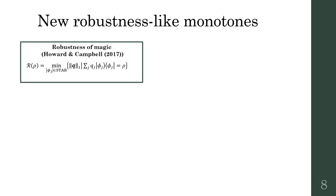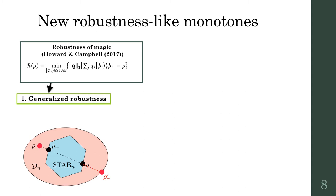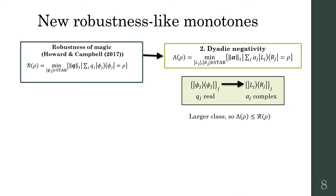In our paper, we obtain new magic monotones by relaxing the definition in two ways. One is called the generalized robustness. You might be familiar with this from other resource theories. I won't spend more time on it in this talk, but it leads to an estimation method we call the constrained path simulator. If you're interested, please see the paper.